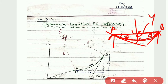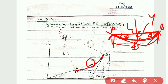Now let us consider this arc AB. If I draw this arc AB here on the bent beam, the original length is L. Here we consider ds — for example, ds is considered as the length of bent arc AB.